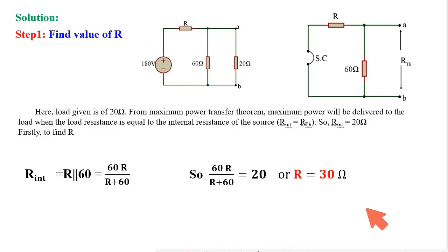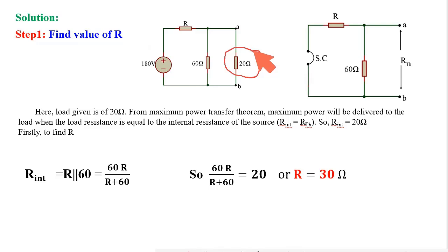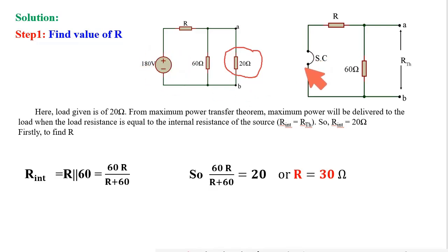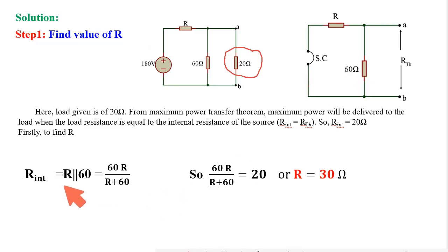First, I am calculating the value of this resistance. My target is to find out RTH. To find RTH, I need to open the load resistance. I have opened this part, and the source will be replaced by its internal resistance, so this will be short circuit. Now RTH is the parallel combination of this R and 60 ohm.